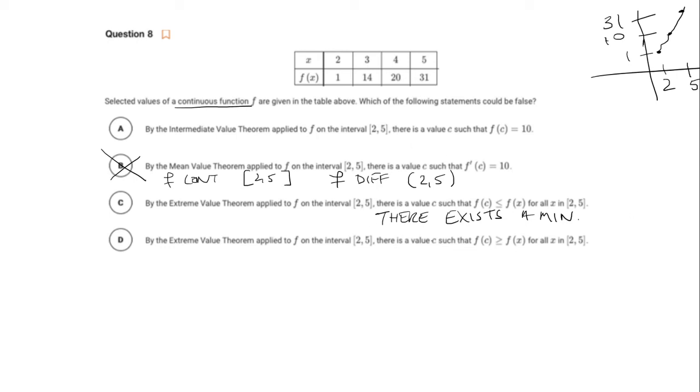Similarly with part D, we're looking at f of c being greater than or equal to f of x. That means there exists a maximum. So for any closed interval that is continuous, there's always going to be a minimum and a maximum. So that's by the extreme value theorem. So C and D are true.